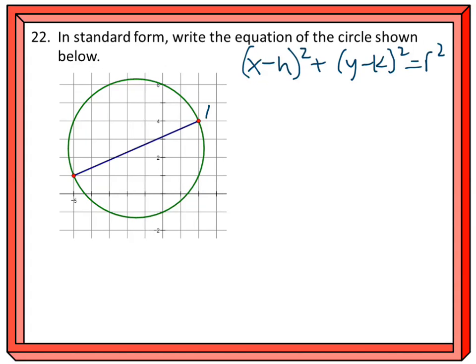On the right here, we have the point (2, 4). On the left-hand side, we have (-5, 1).